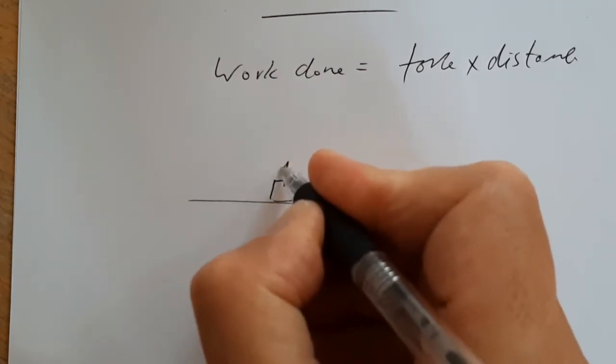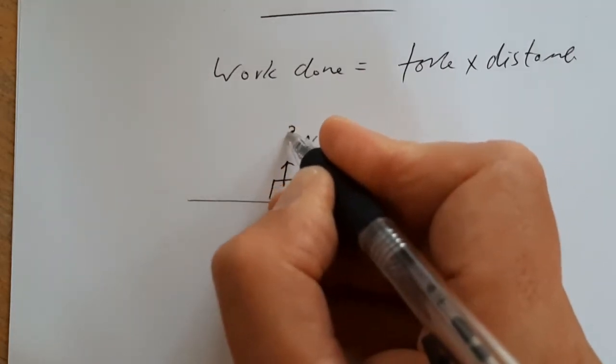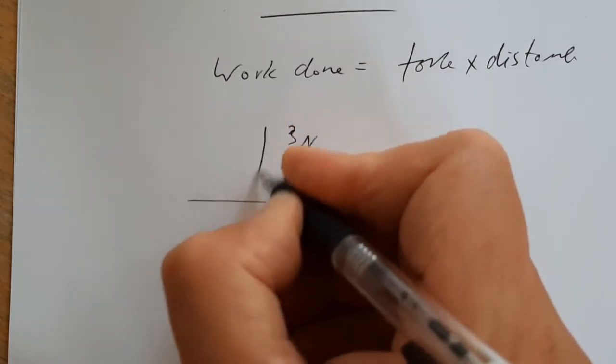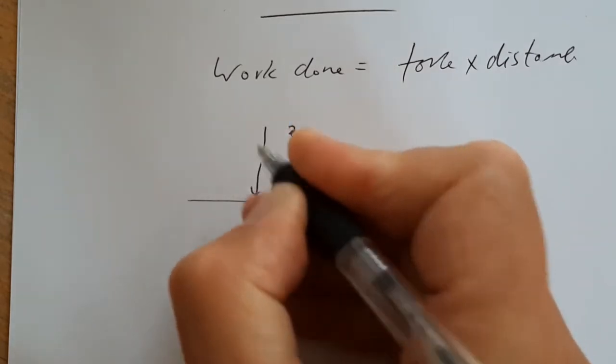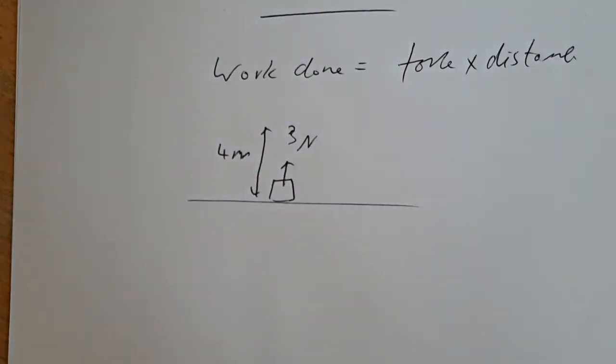Let's imagine that the minimum force needed to lift an object is 3 newtons. And we're going to lift that object through a vertical height of 4 meters. How much work was done in that process? Now, I want you to pause here and work it out.